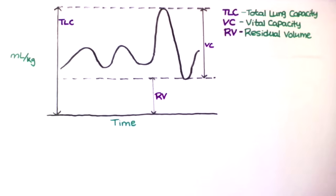So as you're sitting there and you blow all the way out as far as you can, the amount of gas that remains in the lungs is the residual volume. Normally it makes up 20% of the total lung capacity.